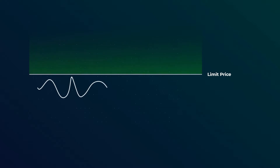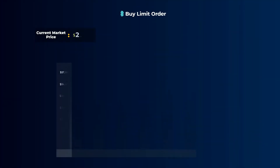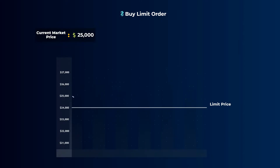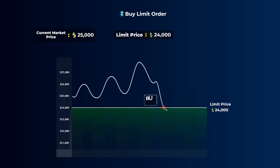When you place a limit order, it will only get executed when the market price reaches the limit price. For example, if the current market price is $25,000 and you want to buy at $24,000, you place a buy limit order and set the limit price at $24,000 — that is the maximum price you are willing to pay. After your order is placed, nothing will really happen and you wait until bitcoin reaches $24,000. Once this happens, your limit order will be executed at $24,000 or lower if possible, but you will never pay more than $24,000.